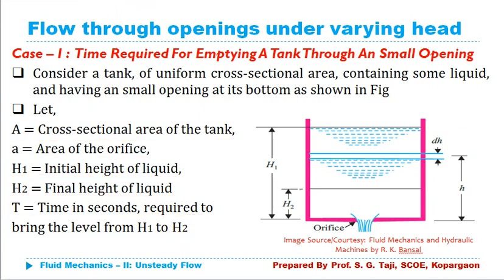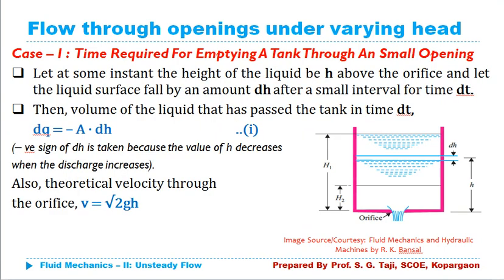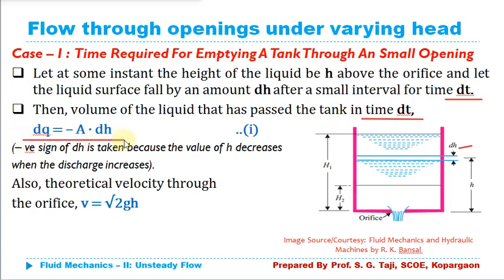We cannot analyze such problems directly, so we consider small strips and analyze those conditions. We consider a small strip where a small depth of water DH flows out from the tank. H is the instantaneous height of the liquid, and DH is the height of liquid taken out over time dt. The volume taken out equals the area of cross section of the tank multiplied by depth, so dQ = -A·dH, where the negative sign indicates DH decreases as volume increases.